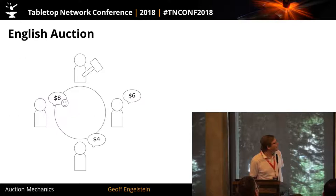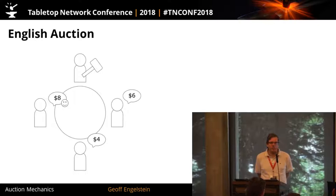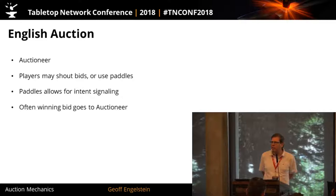Next is the English auction. It's very similar to an open auction except it has an auctioneer who does not participate. The auctioneer gets a gavel. There's no specific order — people just shout — but they're recognized by the auctioneer, giving a little bit of structure. The auctioneer is in charge of resolving precedence issues, talking it up, and can even decide the increments.